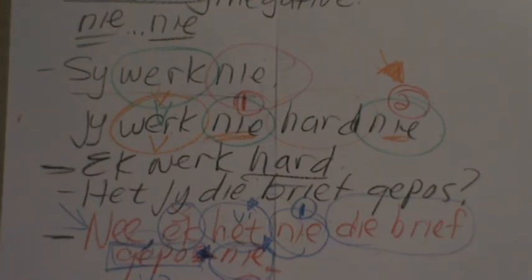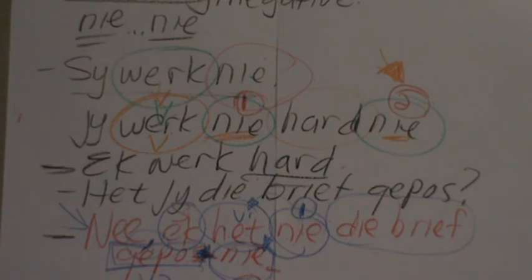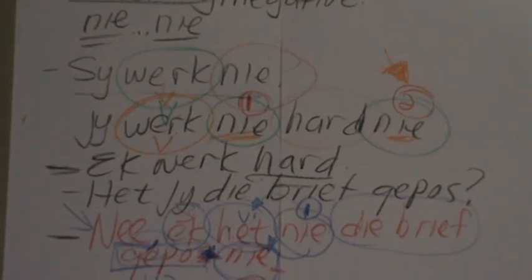We're going to change the board now and deal with onkenningswoorde — like 'no one', 'someone', 'somewhere', and so forth. We're going to translate them and see how we use them in sentences in the negative. Stay tuned for video number two for onkenningswoorde negative. Please remember to tell a friend, subscribe, download for later viewing, and like my page. Thank you for visiting — check out video number two: onkenningswoorde, negative.